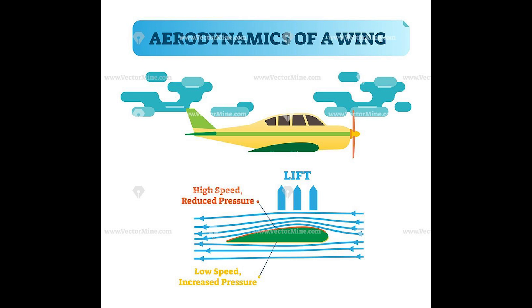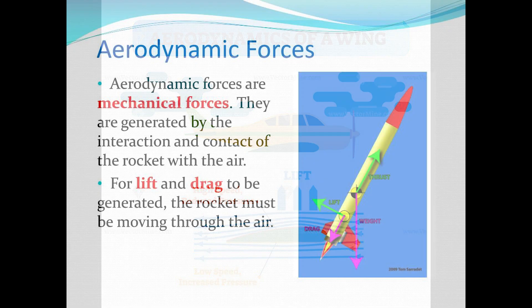Drag is the resistance that opposes an object's motion through the air. It comes in two main types: parasitic drag and induced drag. Parasitic drag includes form drag, caused by the shape of the object, and skin friction drag due to the texture of the surface. Induced drag is related to the generation of lift and becomes more significant at higher angles of attack.